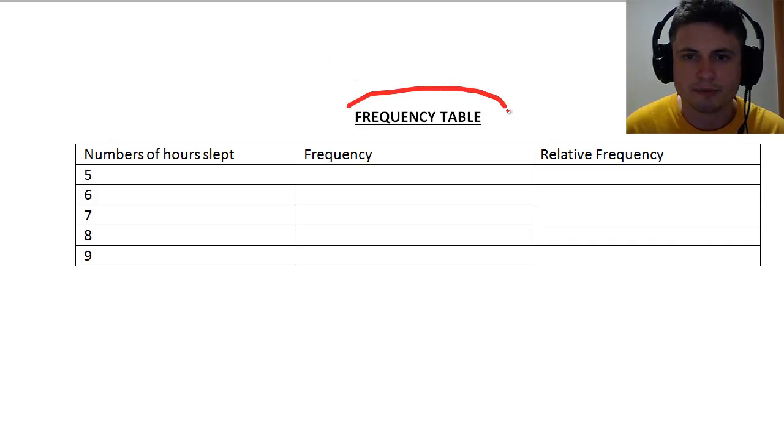We're going to be using a frequency table. This is basically one of the easier ways of distributing the data. In the left column, I have my numbers of hours slept. So I asked students and they all gave me an answer between five and nine. I'm going to put all my numbers right here: five, six, seven, eight, nine. These are numbers of hours that they sleep.